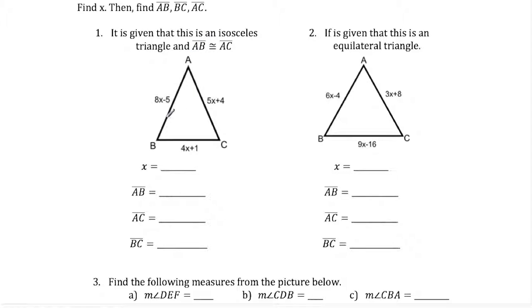Here we're given that AB equals AC. That means this is an isosceles triangle, so we can set the two sides equal to each other. 8x minus 5 equals 5x plus 4. If we subtract 5x from both sides we get 3x, and if we add 5 to both sides we get 9. So we get 3x equals 9 or x equals 3.